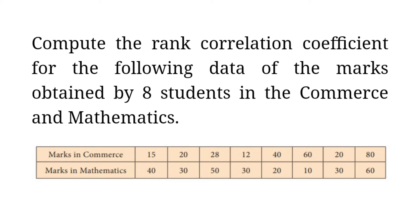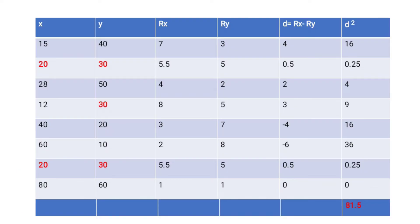Next: compute the rank correlation for the following data of marks obtained by 8 students in commerce and mathematics. Marks in commerce are taken as X and marks in mathematics as Y. Marks in commerce: 15, 20, 28, 12, 40, 60, 20, 80. Marks in mathematics: 40, 30, 50, 30, 20, 10, 30, 60. Write these in the X column and Y column as given in the question.